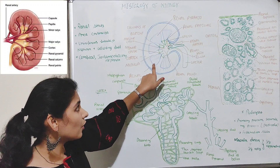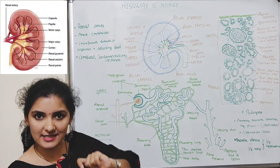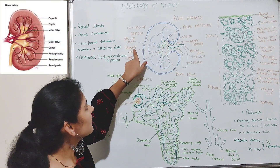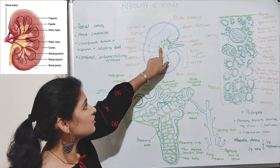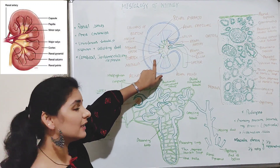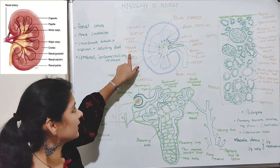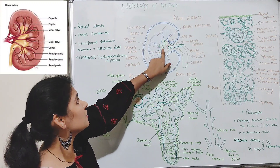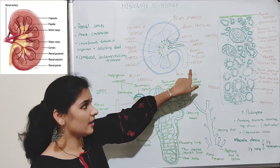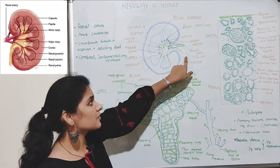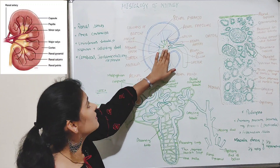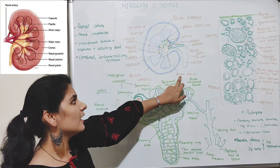The urine produced by the nephrons enters into the renal calyces — a series of chambers beginning with the smallest chamber known as the minor calyx. Many minor calyces join together to form a major calyx. Urine from the millions of nephrons first enters the minor calyx, then the major calyx, then the renal pelvis, and from the renal pelvis it passes through the ureter and is temporarily stored in the urinary bladder.